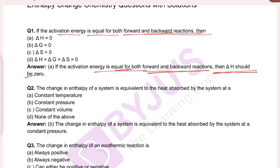The enthalpy is the total heat. If the enthalpy changes are equal to the heat, then the heat will be zero. If heat is released, it will also be absorbed. We use delta H to express this. If the forward reaction and backward reaction activation energies are equal, then the enthalpy change is zero.